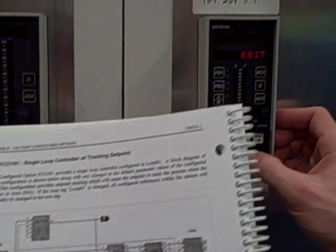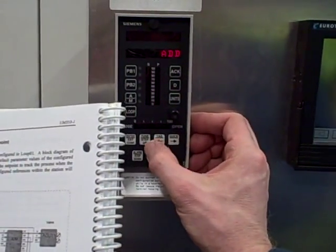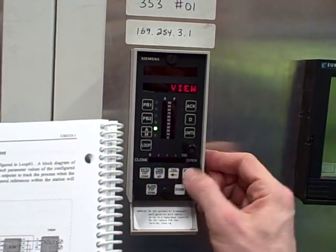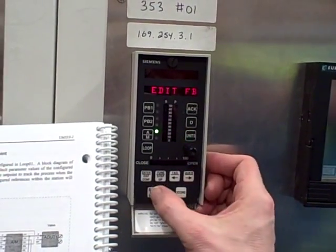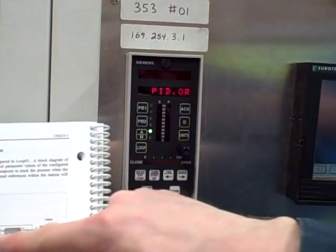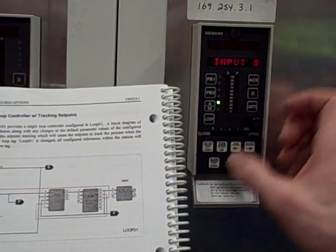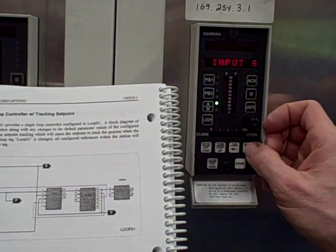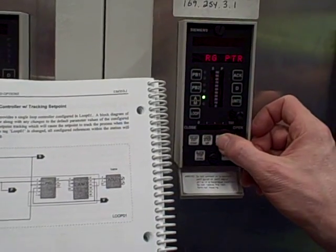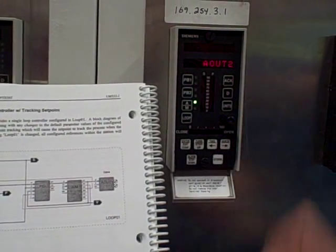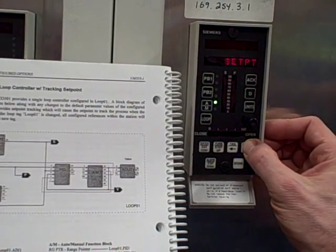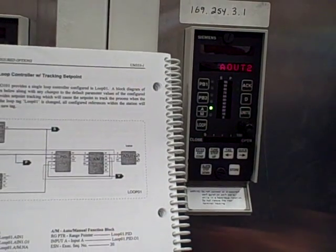Stepping up, going to edit — actually, let's go out of this entirely, I hit a wrong button. Let's do the configuration again. Stepping down twice, we're going to 'edit function block.' We can take a look at our original analog output block right here — it's got a range pointer that comes from PID dot OR, and an input S which comes from auto manual block 01. Now I'm going to step up and select analog output 2. Notice how that now shows up as one of our options. Looking at all the available blocks in this function program, I can see that analog output 1 and 2 are both there — it didn't used to be there, but I've now added it.